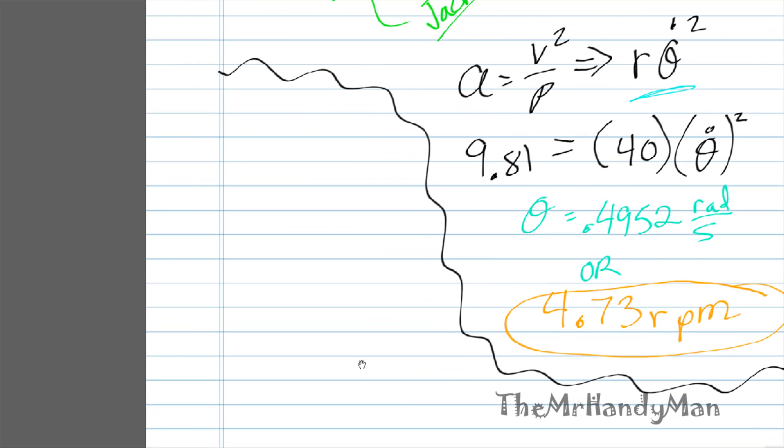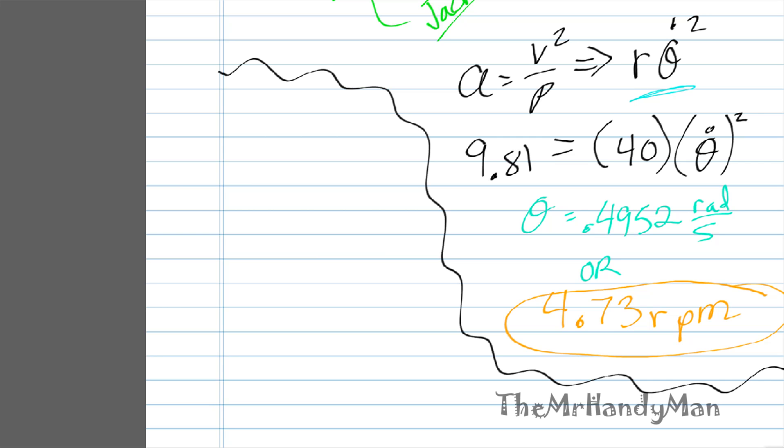If we cut that rotation speed in half, so let's say we had a 50% reduction in the rpms, 2.36, so 50% rpm. Or namely theta dot is equal to 2.36 rpms, which is equal to 0.2476 radians a second.